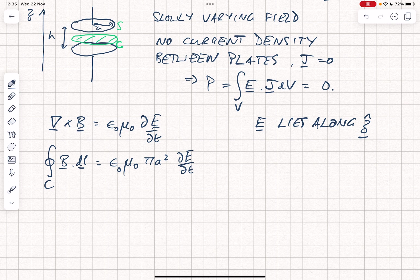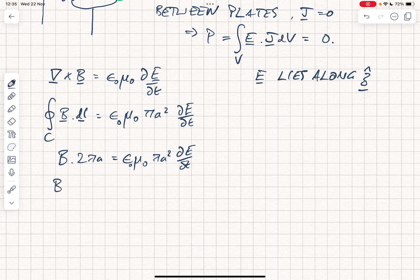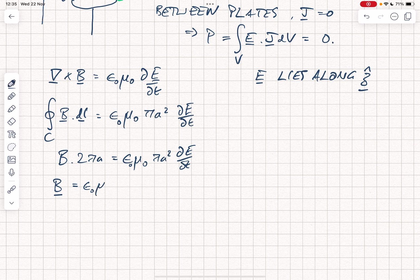B itself, we can say simply from geometry, is going to be in the phi direction, the angular direction. The line integral is also in that direction. So therefore, the left-hand side becomes B multiplied by 2 pi A. And that's going to equal epsilon naught mu naught pi A squared dE by dt. So we can now write, if we want to, B itself, if the direction is equal to epsilon naught mu naught, the pi's will cancel, we have an A over 2, and we have a dE by dt, and it's in the phi direction.